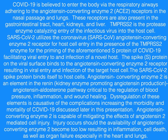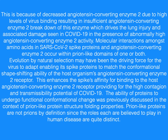Angiotensin-converting enzyme II is capable of mitigating the effects of angiotensin-2-mediated cell injury. Injury occurs should the availability of angiotensin-converting enzyme II become too low, resulting in inflammation, cell death, as well as organ failure, especially in the heart and lungs. This is because of decreased angiotensin-converting enzyme II due to high levels of virus binding, resulting in insufficient breakdown of this enzyme, which drives the lung injury and associated damage seen in COVID-19. In the presence of abnormally high angiotensin-converting enzyme II activity, molecular interactions amongst amino acids in SARS-CoV-2 spike proteins and angiotensin-converting enzyme II occur within prion-like domains of one or both.